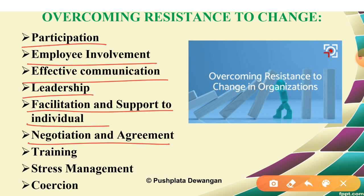The sixth strategy is negotiation and agreement — when employees are losing something due to change, management must compensate for the loss, and stronger job security can be offered as a gain. The seventh is training — used when employees need to break old routines and adopt new patterns, learning how to work in a team; though it is time-consuming and costly. The eighth is stress management — used when communication, training, and other strategies are not working efficiently; employees are given sessions to reduce their tensions, though this is also time-consuming and costly.